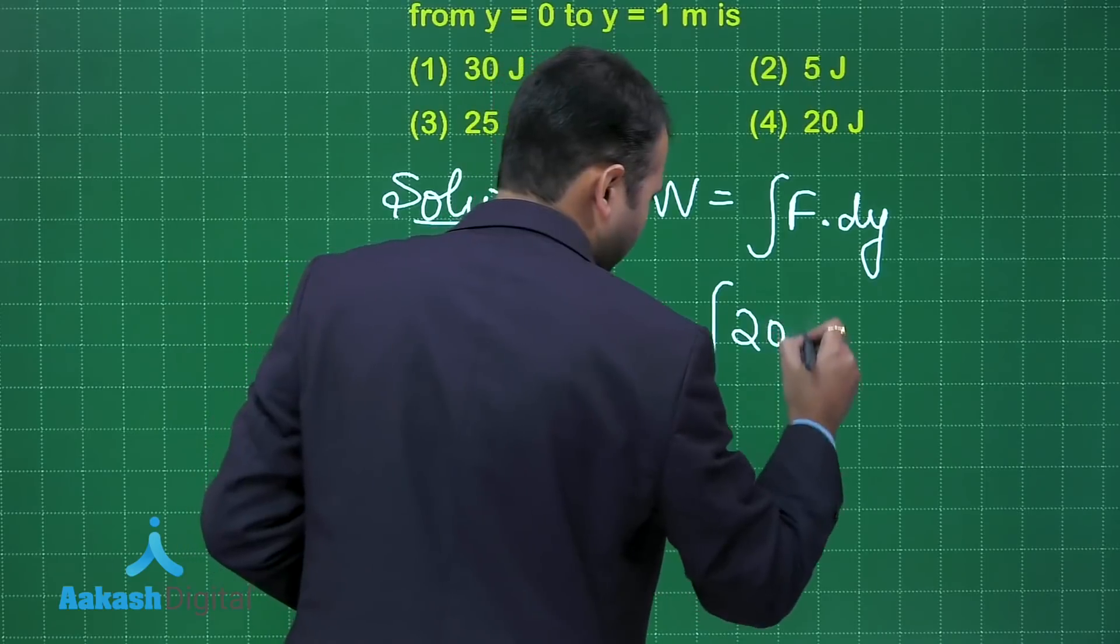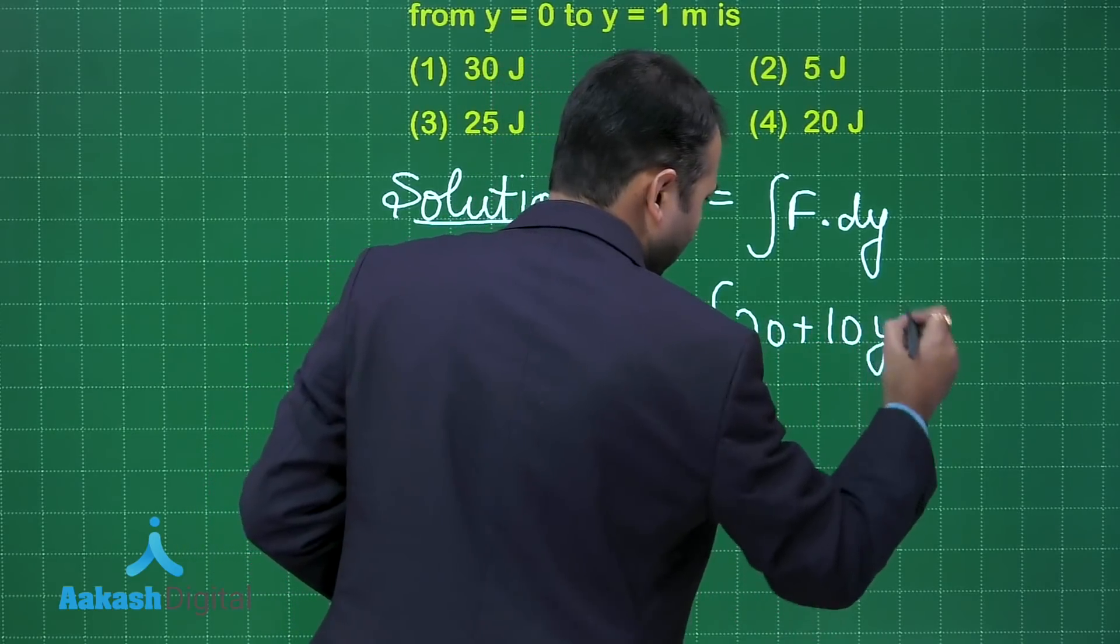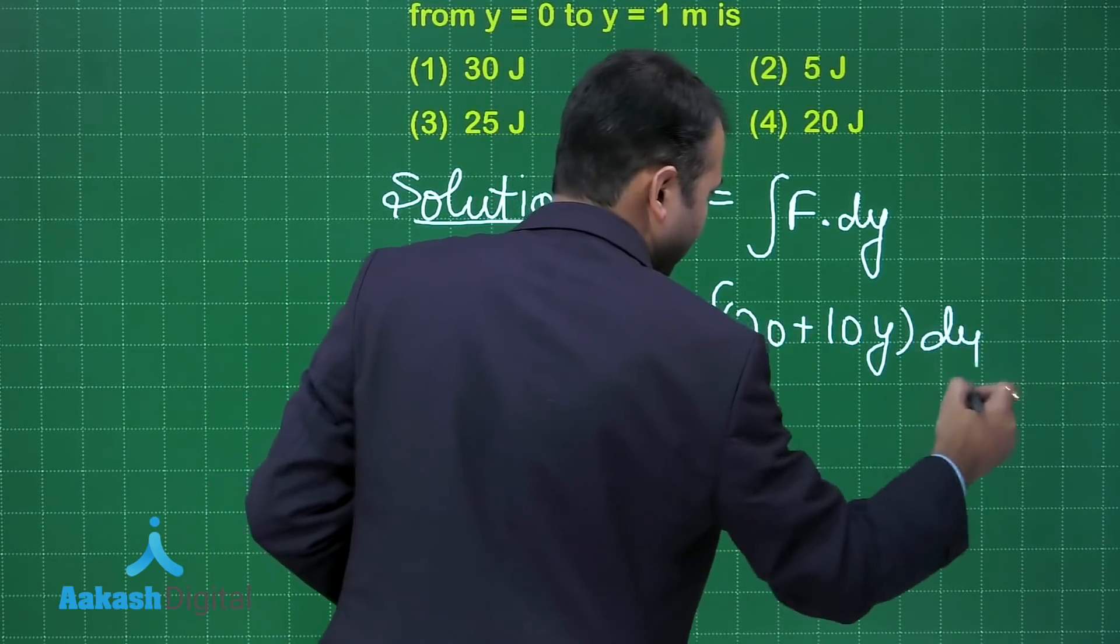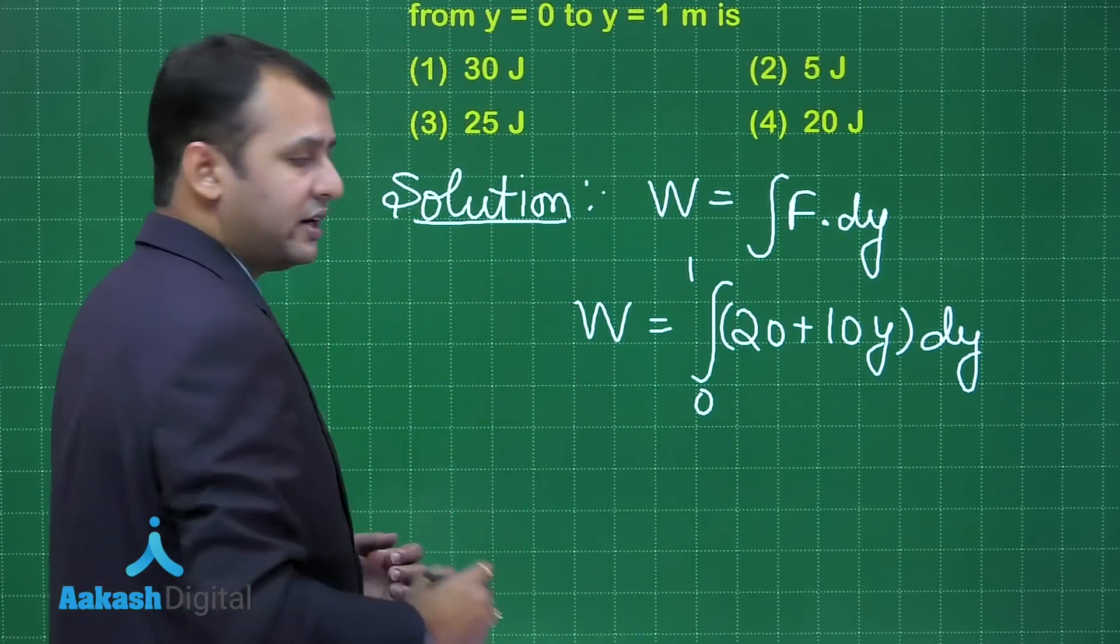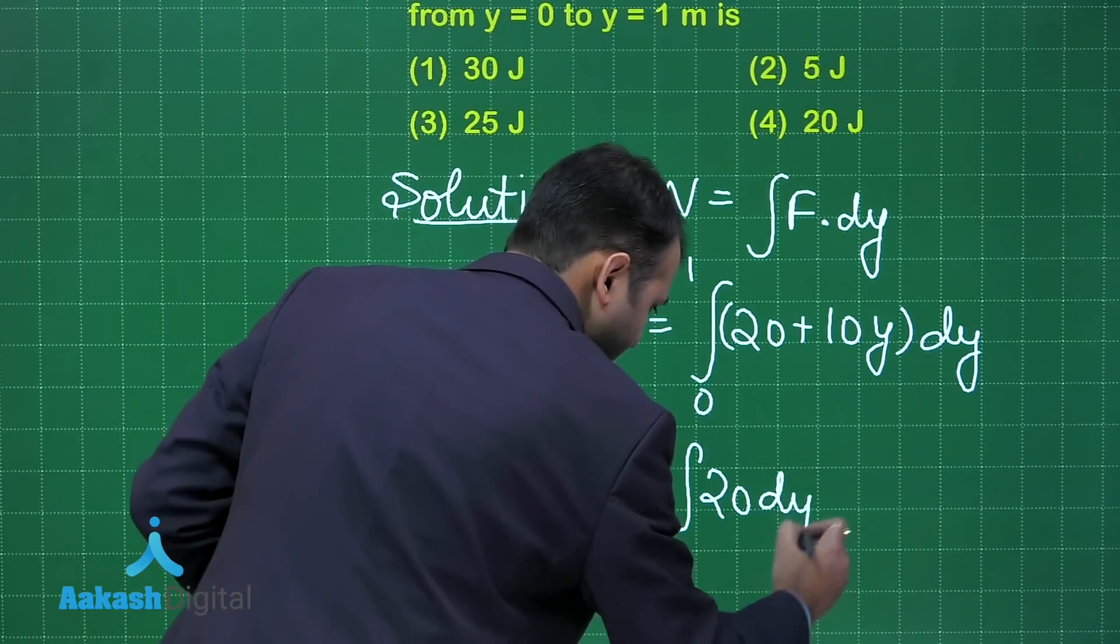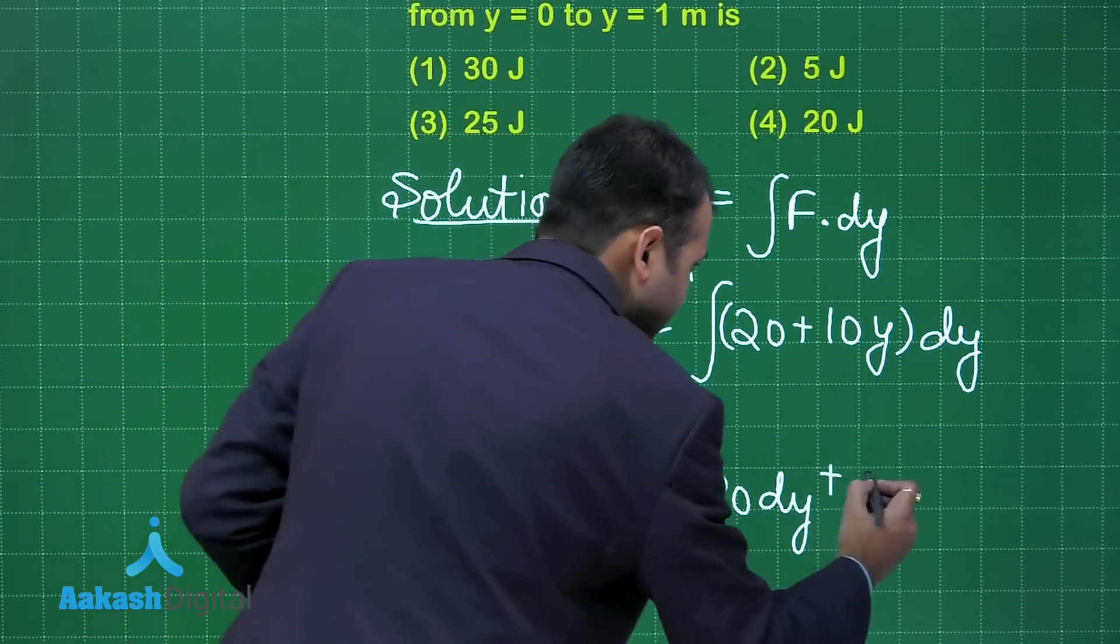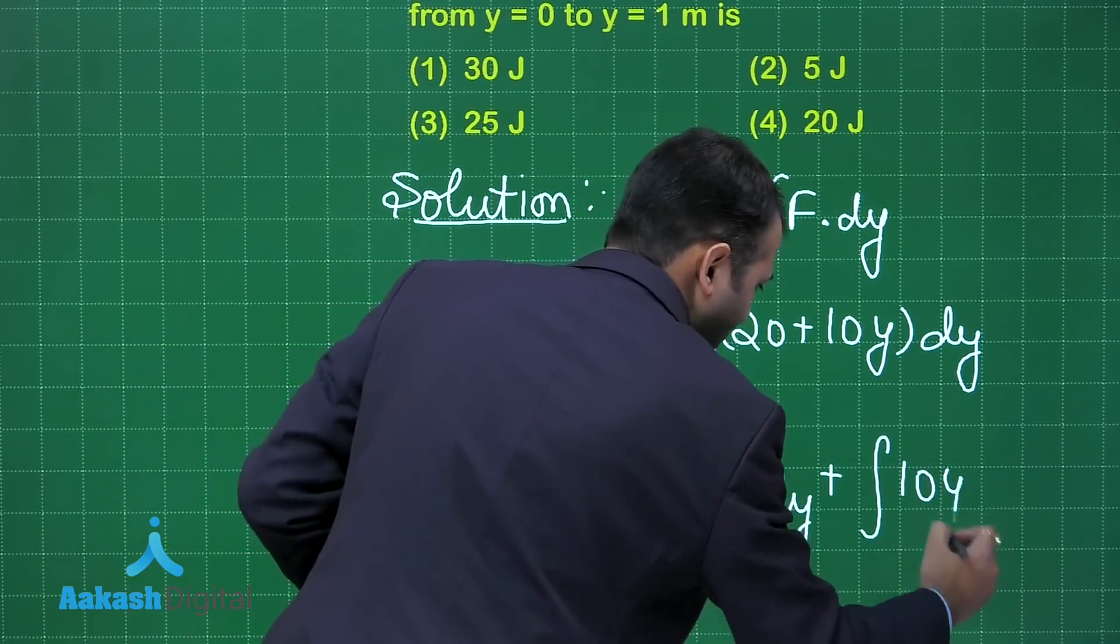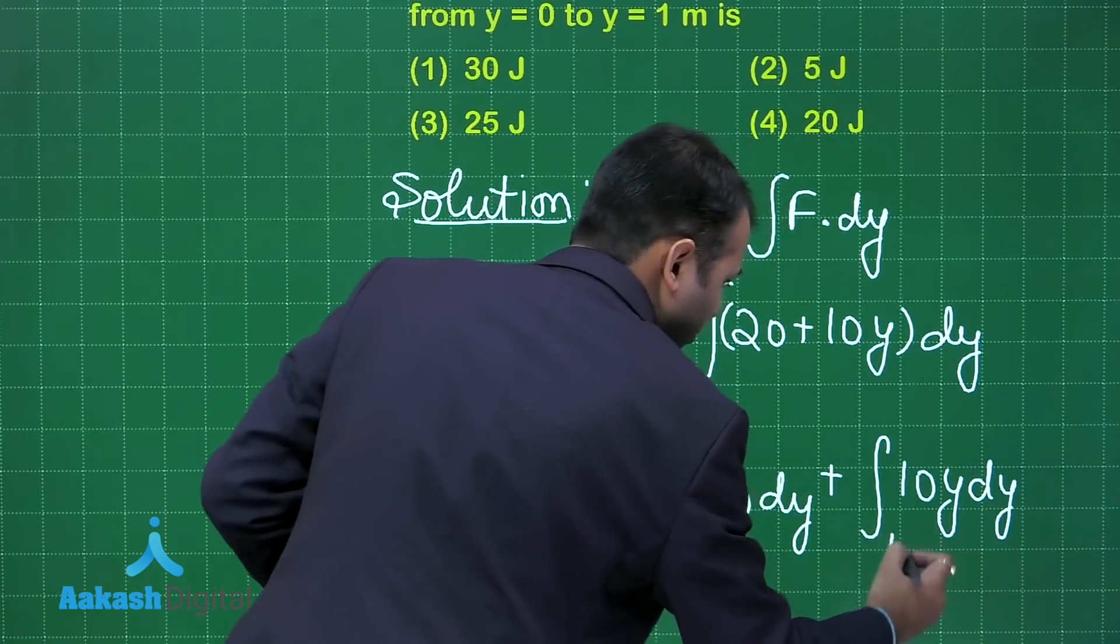When you put down the values you will get work done equals integral of 20 plus 10y into dy and the variation should be 0 to 1. When you solve this you will get integral of 20 dy from 0 to 1 plus integration of 10y dy from 0 to 1.